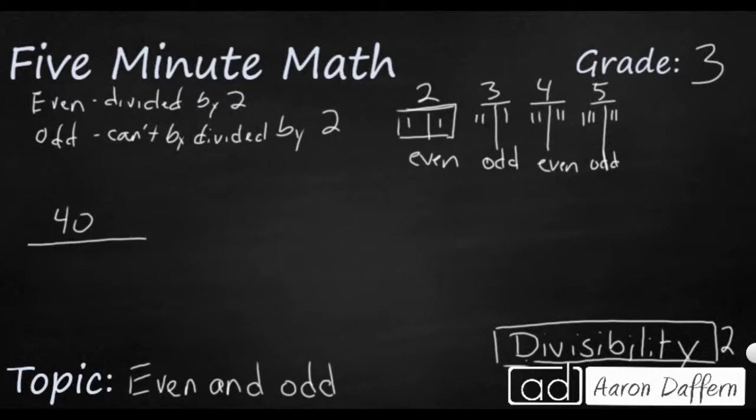So one, two, three, four, five. I'm going to do sets of five. Ten, fifteen, twenty, twenty-five, thirty, thirty-five, forty. So it splits evenly. So this is going to be an even number.